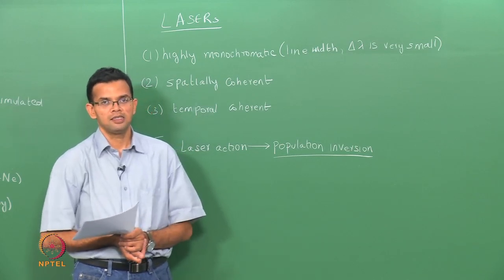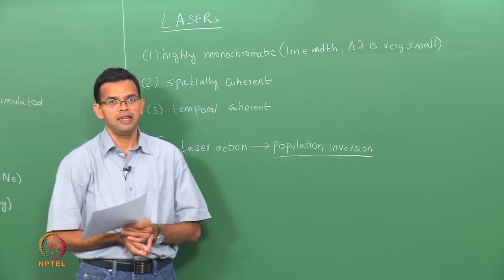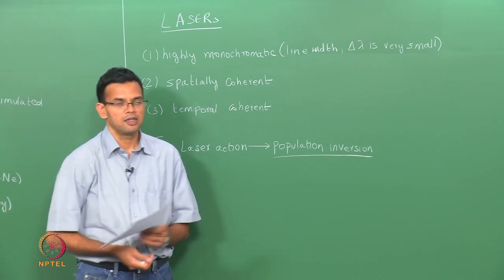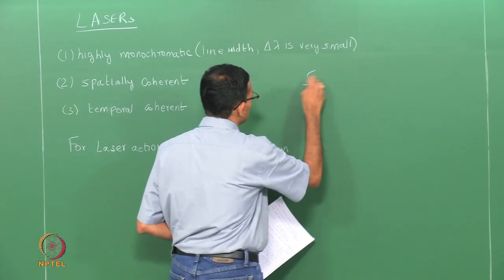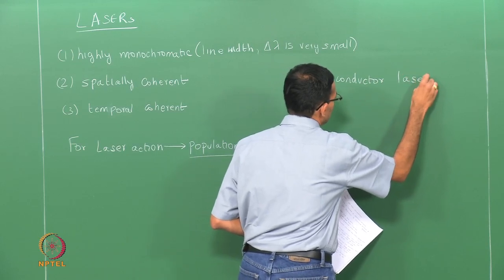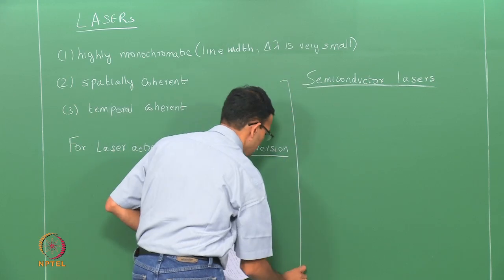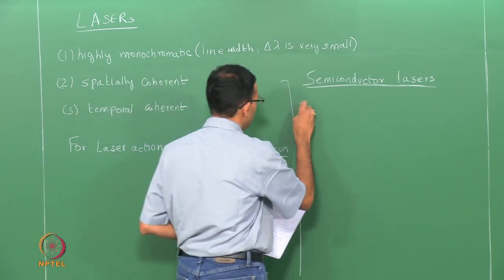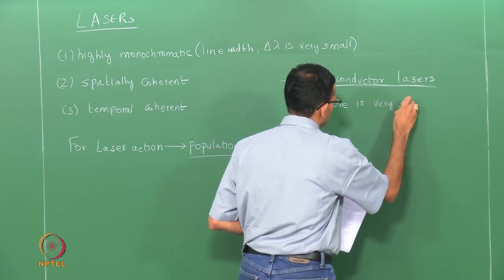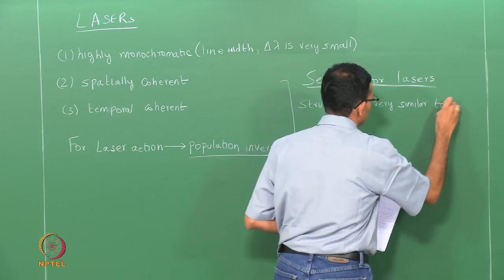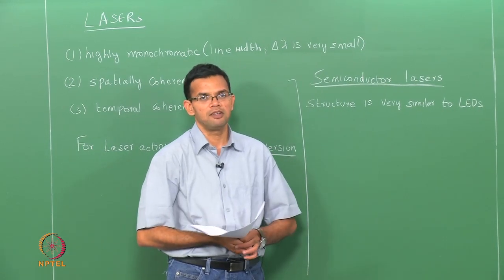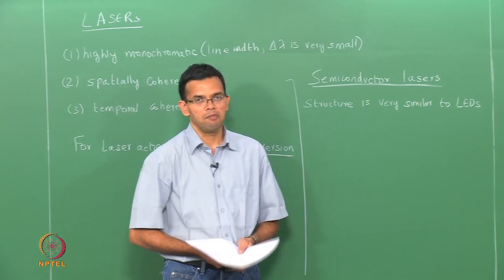In the case of semiconductor lasers, their structure is very similar to the LEDs we saw before. But when we compare semiconductor lasers to lasers produced by other means, for example a gas-based laser, there are some important differences. In the semiconductor case the transition is between energy bands.